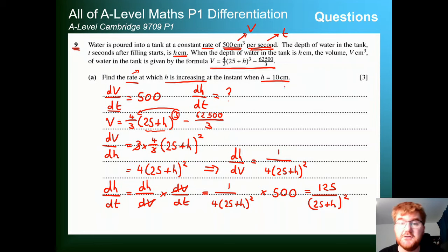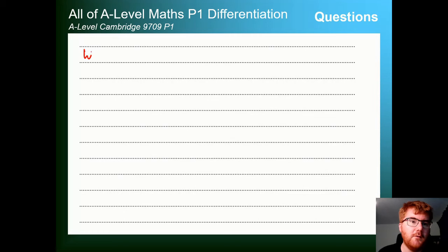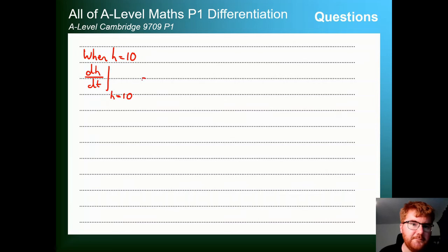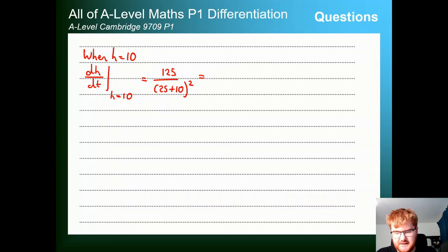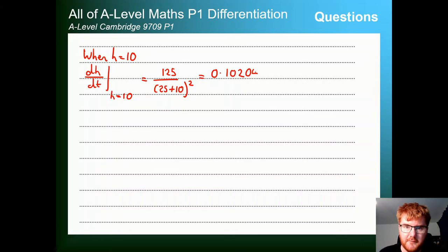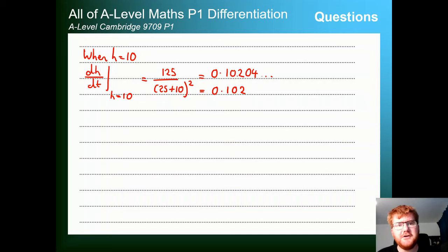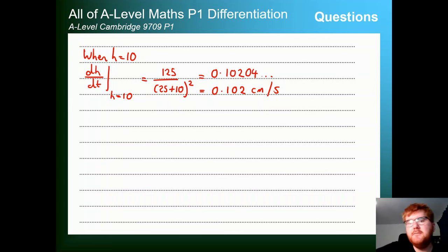When h = 10: dh/dt = 125/(25+10)² = 125/1225 ≈ 0.102 centimetres per second (to 3 significant figures). Notice the units: h is in centimetres, time is in seconds, so the answer is in centimetres per second. If you do physics, you'll know this idea of tracking units is very important — read the question and transfer the units across to the answer.